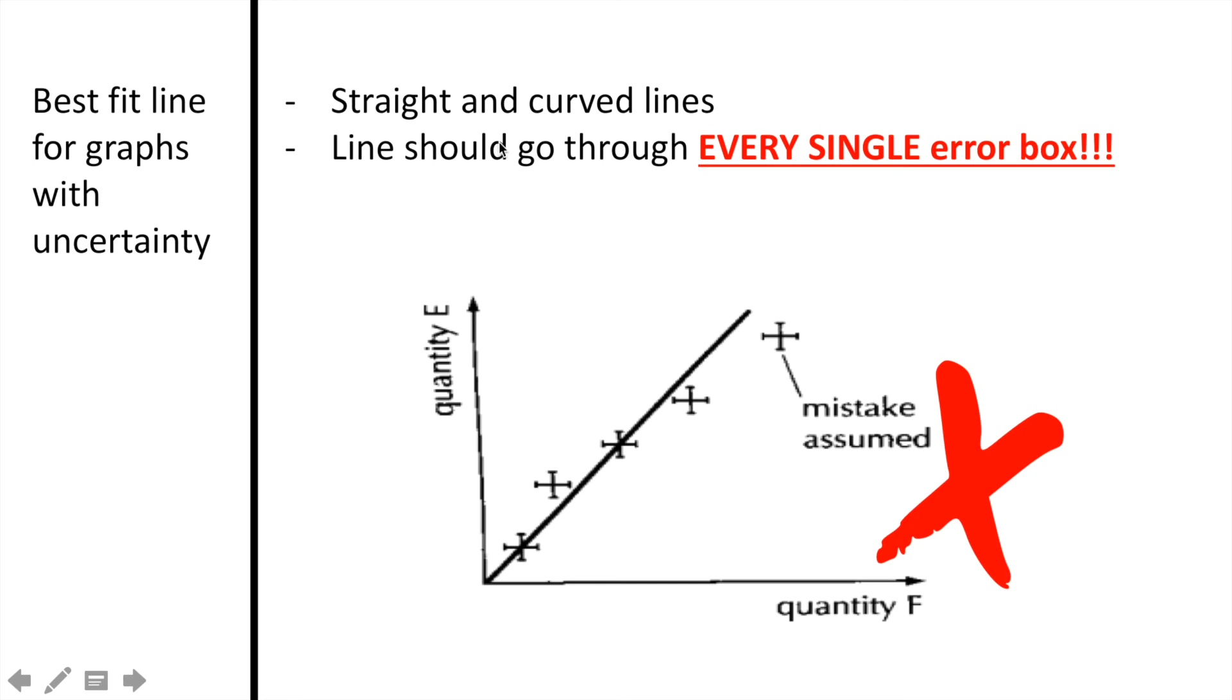When drawing lines of best fit for points that have error bars, we can draw these for both straight and curved lines. One thing to note is that a line of best fit should go through every single error box. If you look at the graph below, you'll see that the line of best fit does not go through each of the error boxes. If it is not possible to draw a line that goes through every single box, then your data is suspect or you have chosen the wrong kind of line to fit. This might actually be more of a curved graph and not a line graph. So be careful and make sure that you have data points plotted correctly and that you are looking at the trend before you draw your line of best fit.